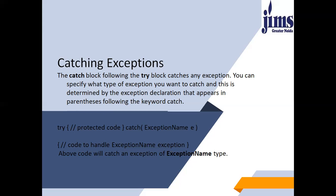Can we throw an exception manually? You can throw a user-defined exception or a predefined exception explicitly using the throw keyword. To throw an exception explicitly, you need to instantiate the class and throw its object using the throw keyword. If this type of question is asked in university, a runtime error is called an exception error — it is any event that interrupts the normal flow of program execution. Examples of exceptions are arithmetic exceptions, null pointer exception, divide by zero exception, etc.